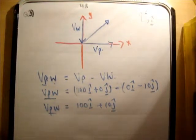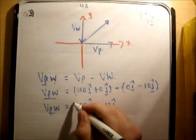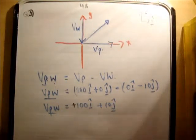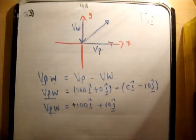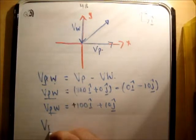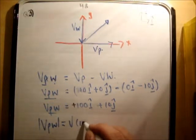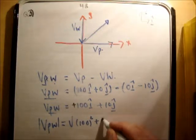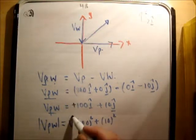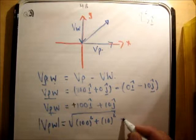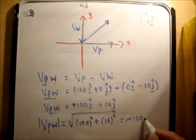Now, does that make physical sense? Well look, we have plus i hat plus j hat, which is in the first quadrant, where we initially thought the particle would actually be going. So that's correct. And if we get the magnitude of this, is equal to the square root of 100 squared plus 10 squared. And that's approximately 100.5.